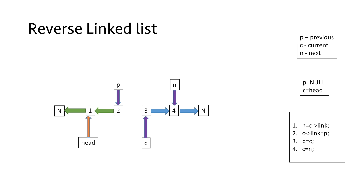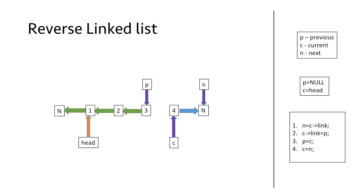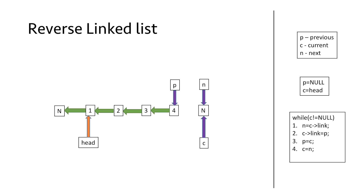We repeat the process for nodes 3 and 4. For node 3, we make the link part equal to p, increment p, and increment c to point to node 4. We increment the next pointer, which now reaches null. For node 4, we make the link part of c equal to p and increment p. When we increment c, it reaches null, which means there are no further elements — this is our exit condition: when c equals null we stop. We then repeat steps 1 through 4 until c is not equal to null, and finally equate head equal to p, pointing the head to node 4 as the new starting point of our reversed linked list.